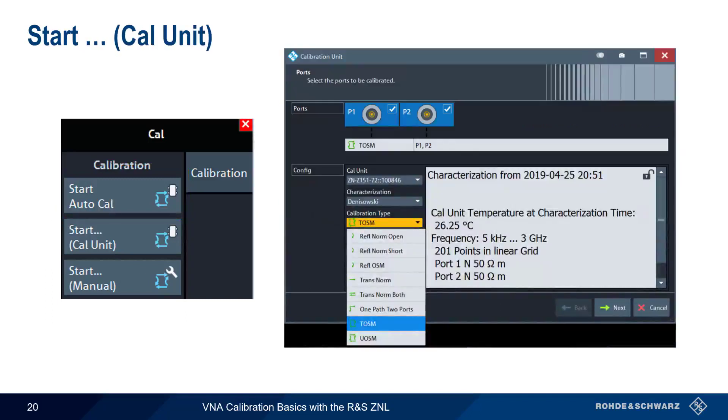If we want more control over the automatic calibration, for example choosing a different calibration type, then we can select Start Cal Unit.